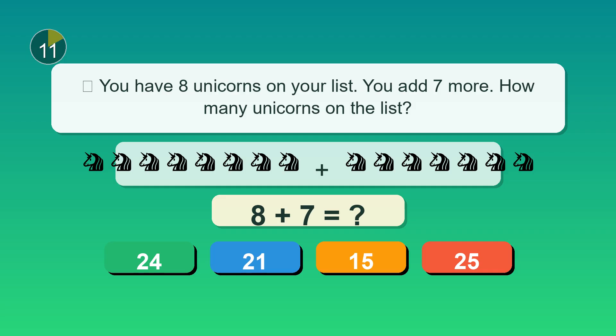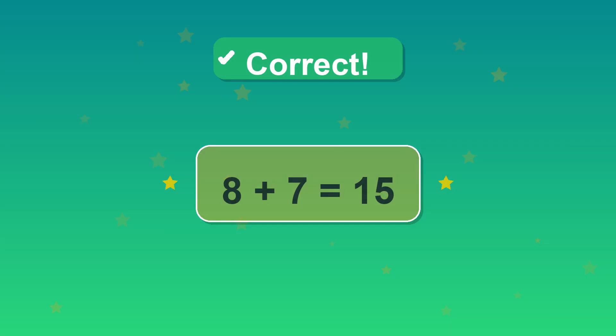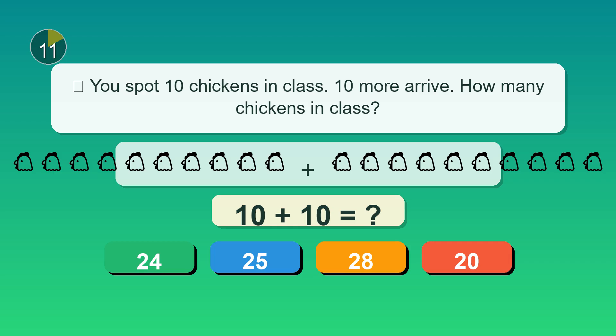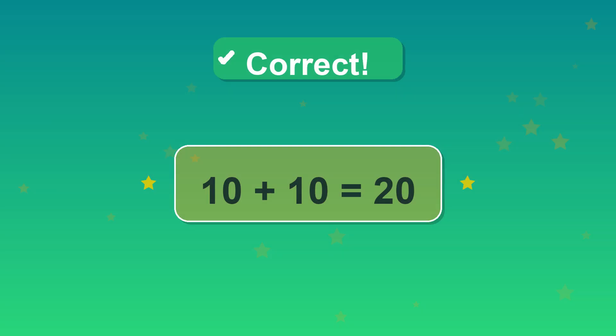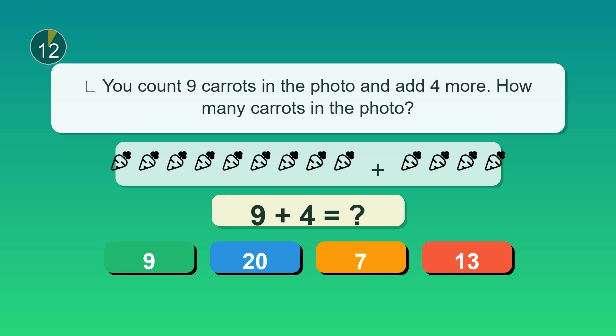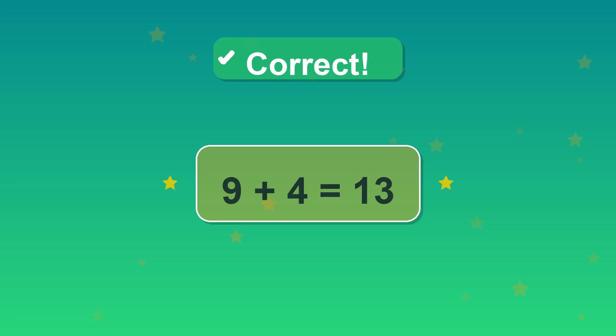You have eight unicorns on your list. You add seven more. How many unicorns on the list? Winner. 15. You spot ten chickens in class. Ten more arrive. How many chickens in class? 20. Nice work. You count nine carrots in the photo and add four more. How many carrots in the photo? 13. Cool.